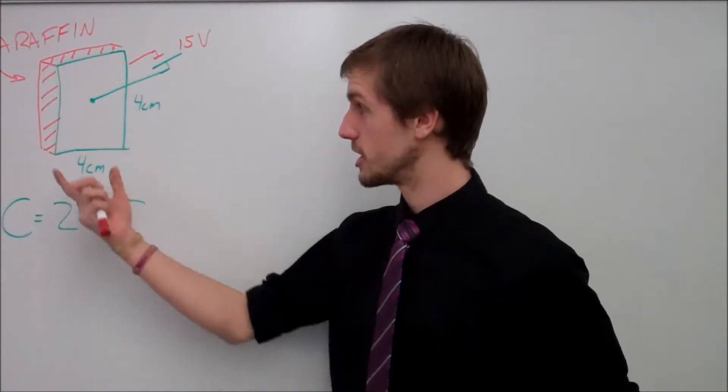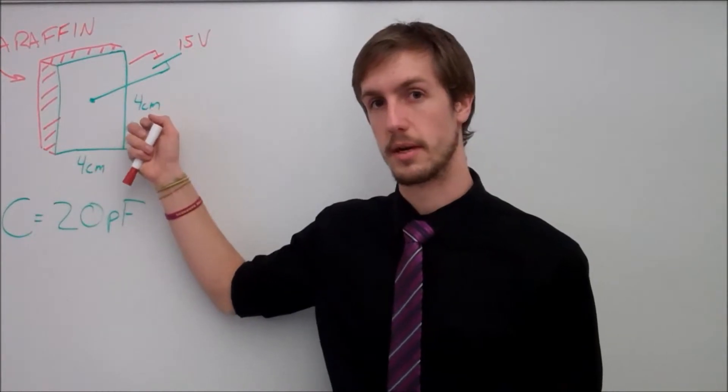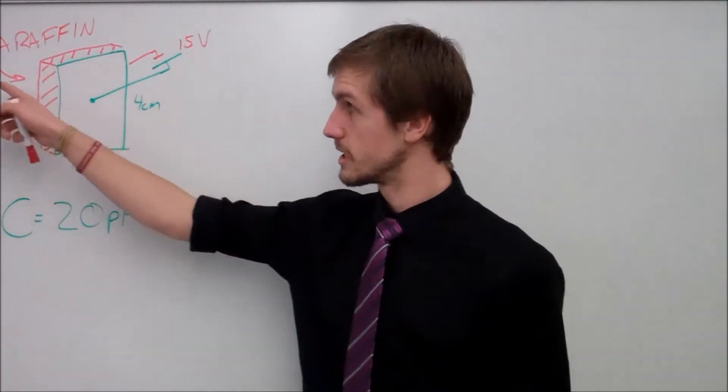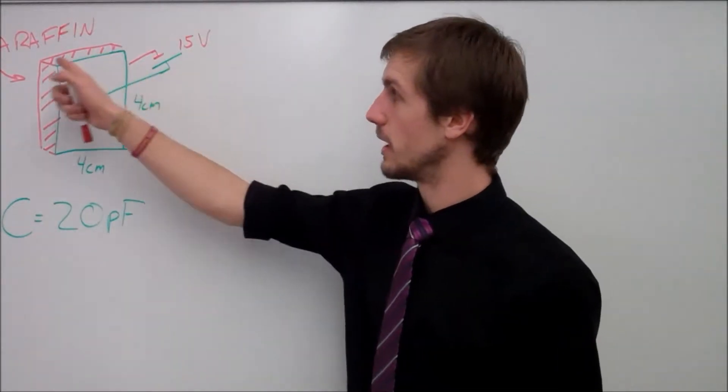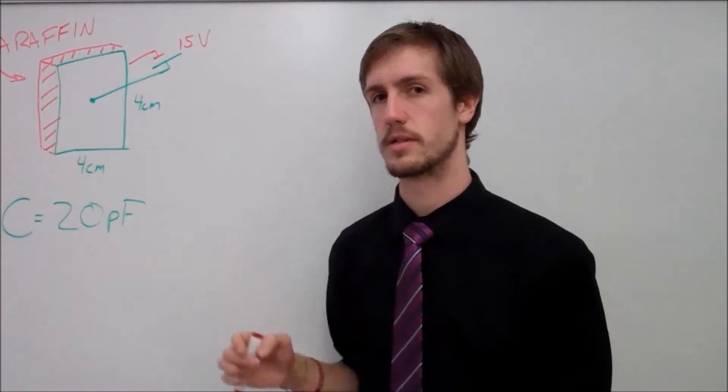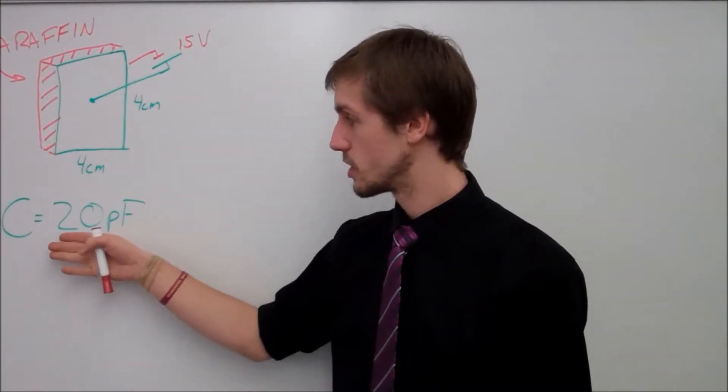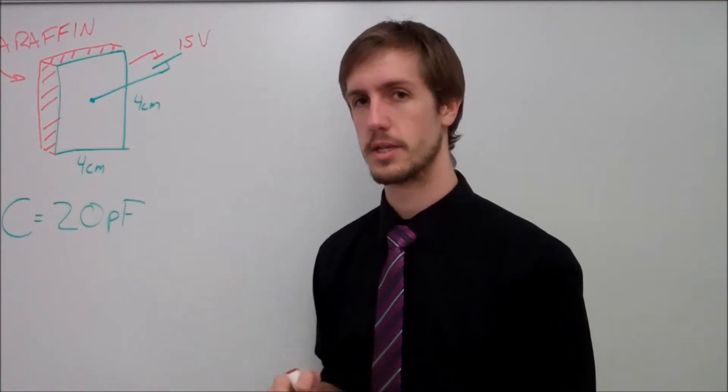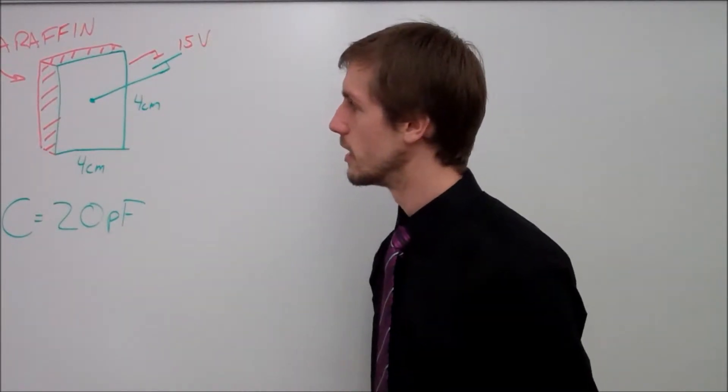So far what I have is I have a sheet of metal which is 4 centimeters by 4 centimeters, and I know it's separated by paraffin, and the difference in potential between my negative plate and my positive plate is 15 volts. I was also given that the capacitance is 20 picofarads, which is 20 times 10 to the negative 12th farads.